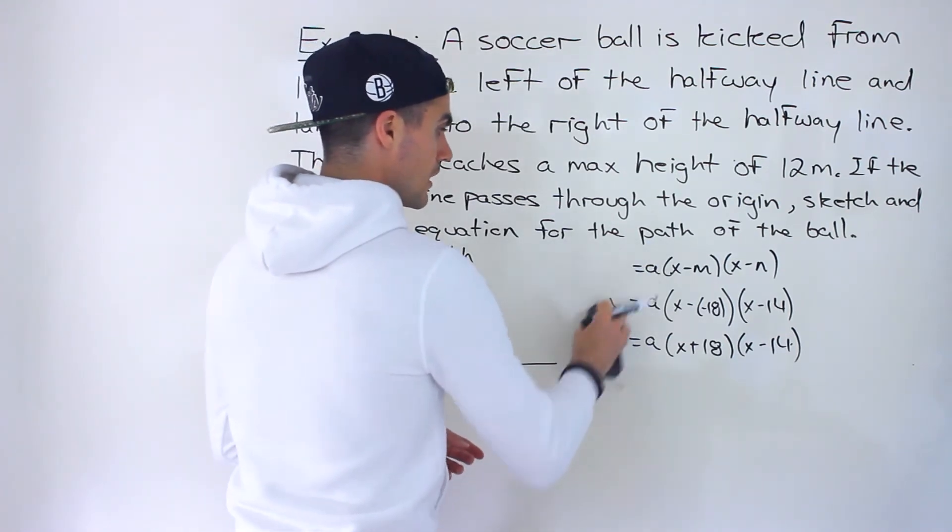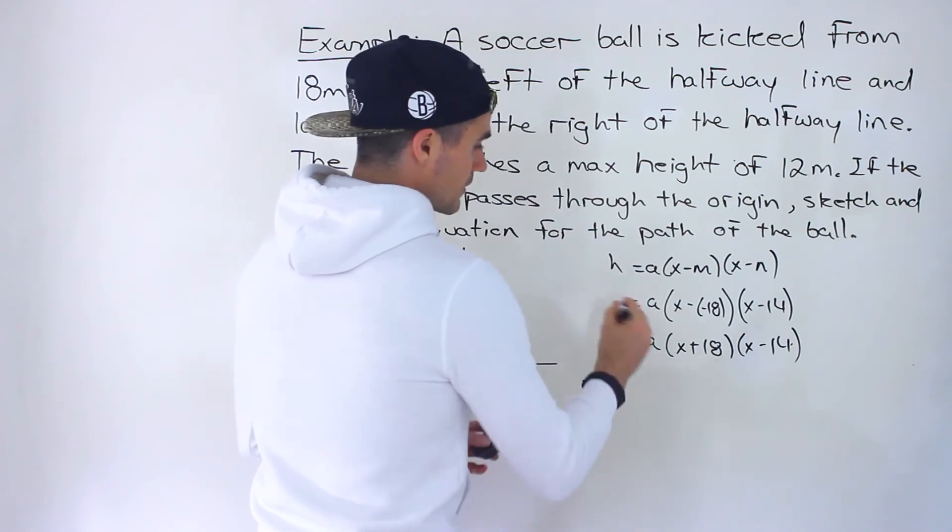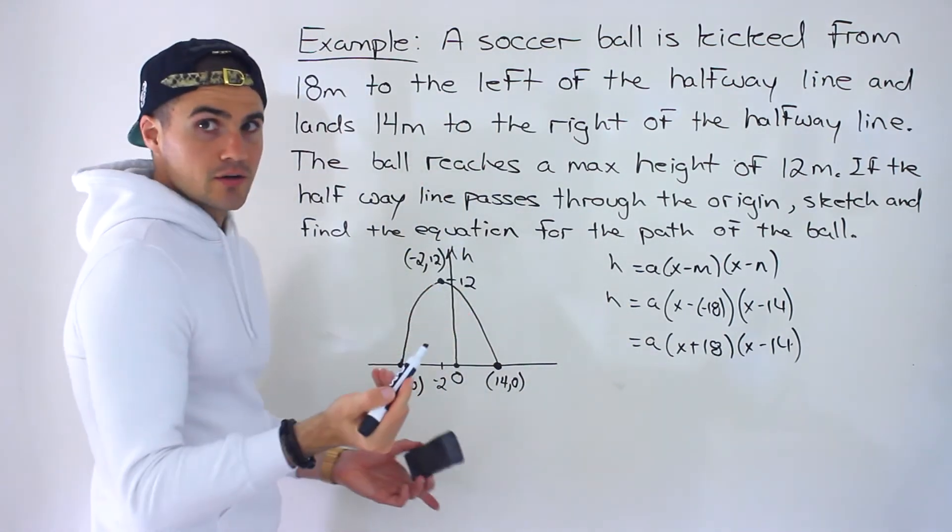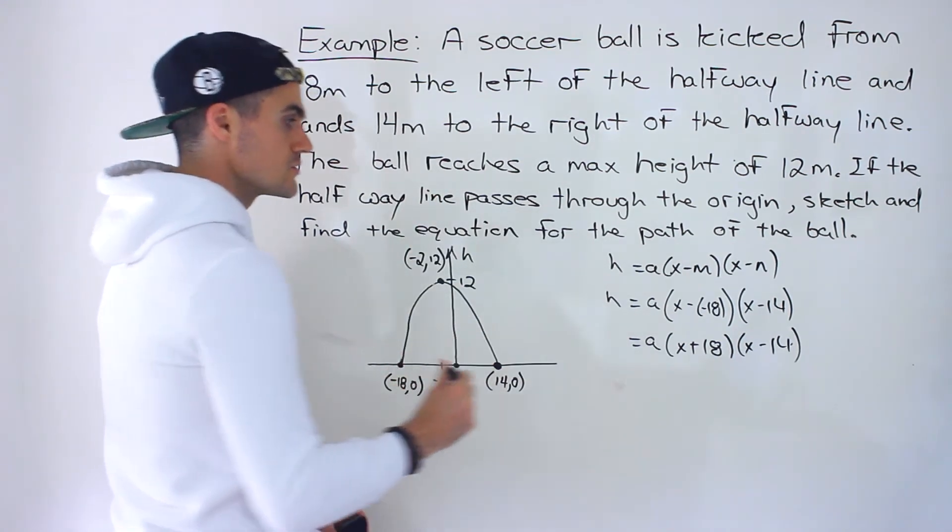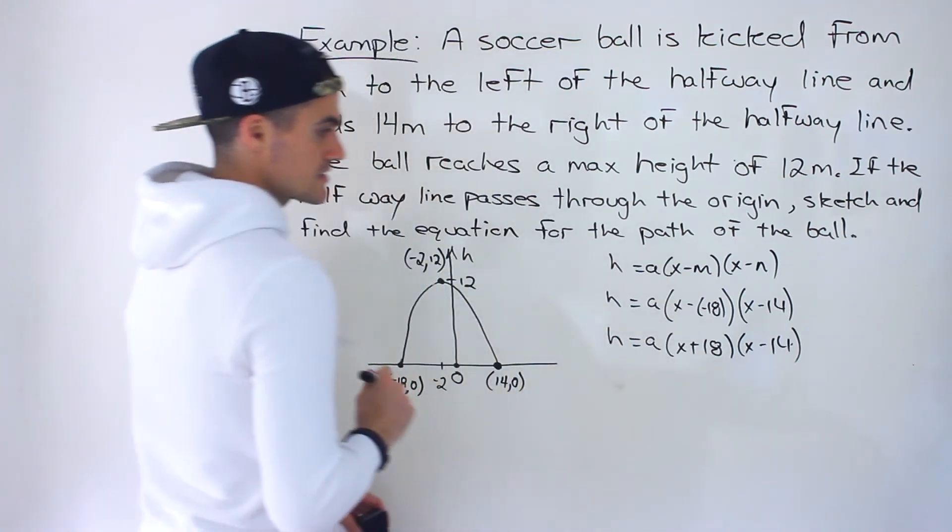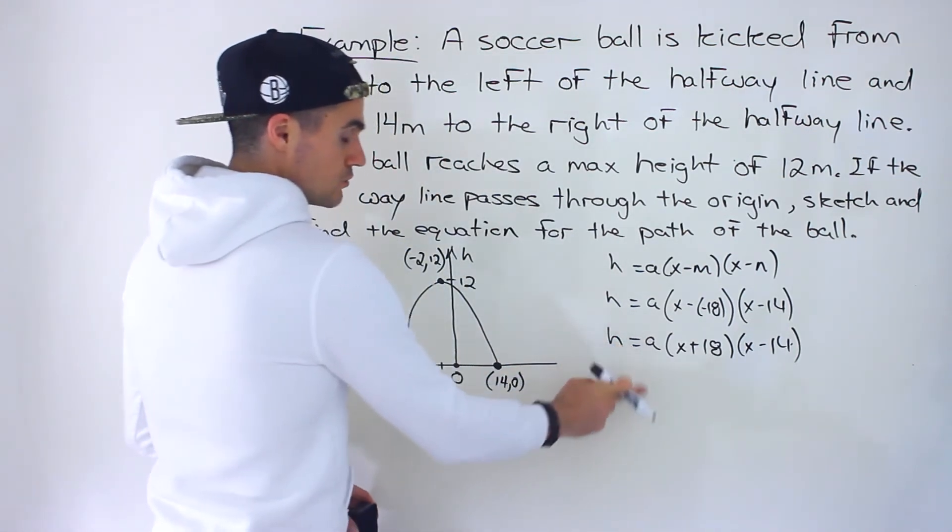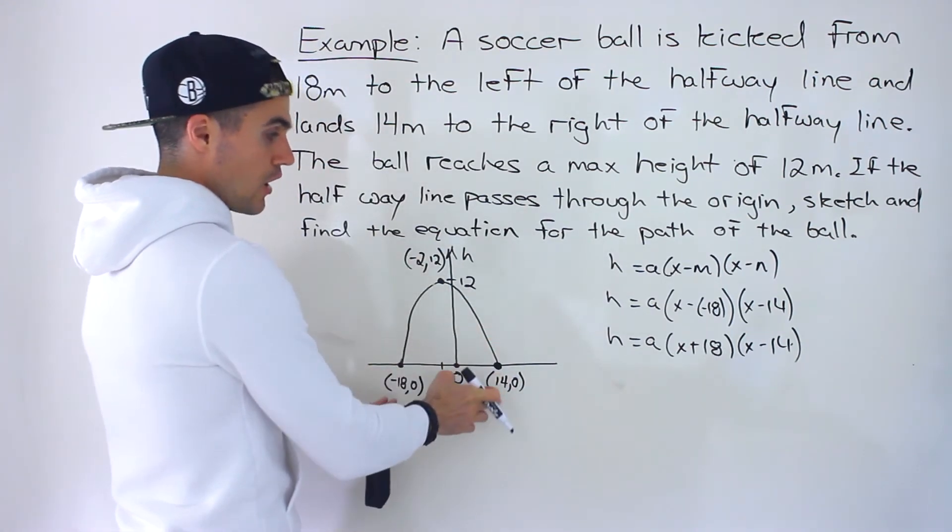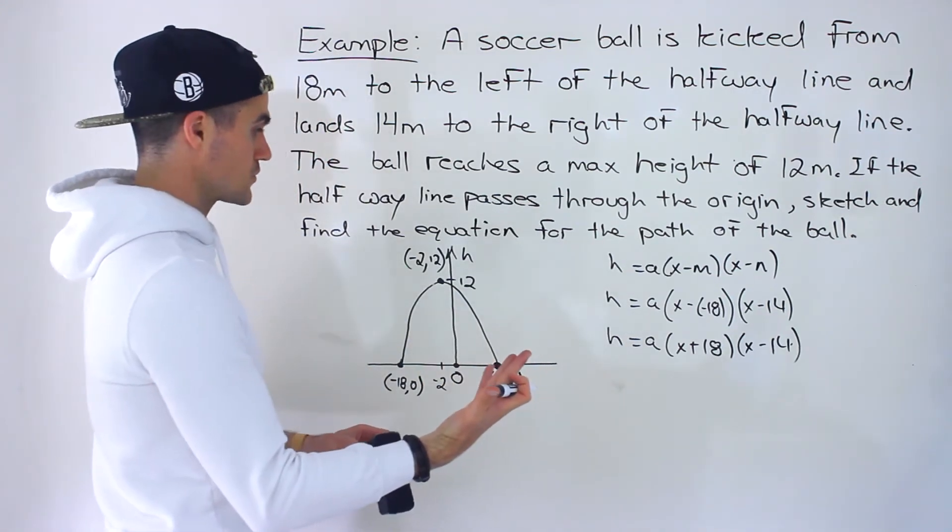And then we could solve for this a value. By the way, I shouldn't have used y because we're dealing with height. It doesn't really matter what letter you're using, but because we're dealing with height here, a more intuitive value to use is h instead of y. So now we got to solve for this a value. What do we have to do? We have to plug in some other point on this graph other than the intercepts to solve for that a value. We've done that in videos before as well.